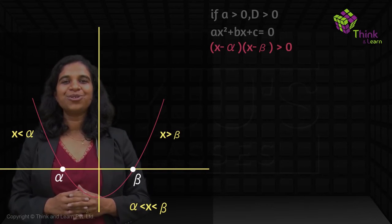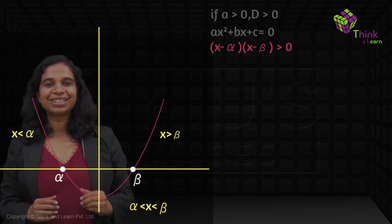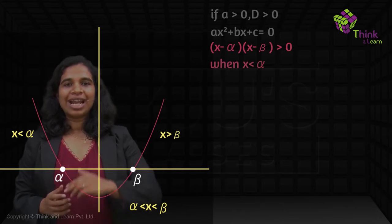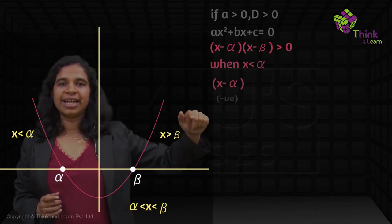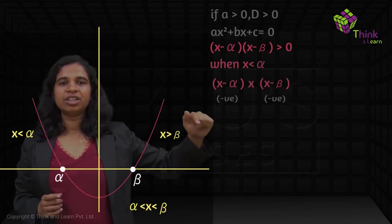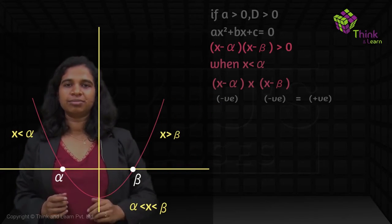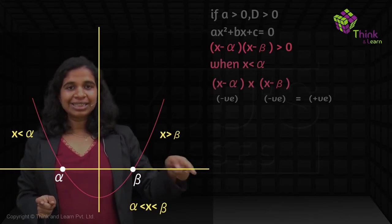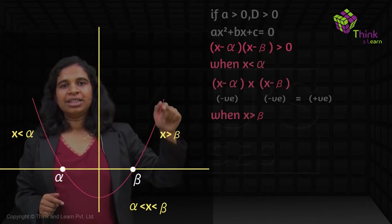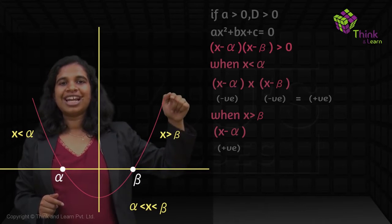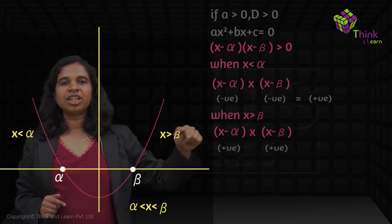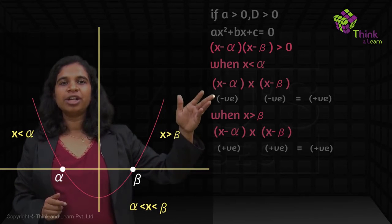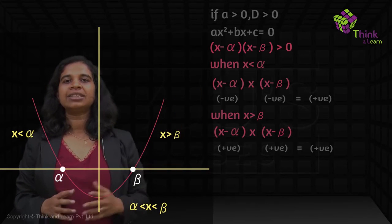Why is that a cool way of writing it? When x is less than alpha, x minus alpha is negative and x minus beta is also negative — negative times negative is positive. When x is greater than beta, x minus alpha is positive and x minus beta is also positive — positive times positive is positive. That's why (x − alpha)(x − beta) > 0.